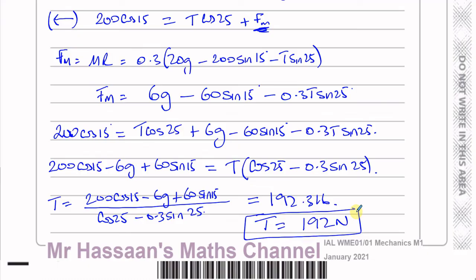You could also round this to 2SF as 190 newtons. It's perfectly fine to use 2SF when g appears in your calculations. If there's no g in your calculation, you must round to 3SF. But if you give it to 3SF, you'll still get the marks. So it's generally safer in your exam to just round to 3SF for these kinds of questions, since it's acceptable whether or not you use g.